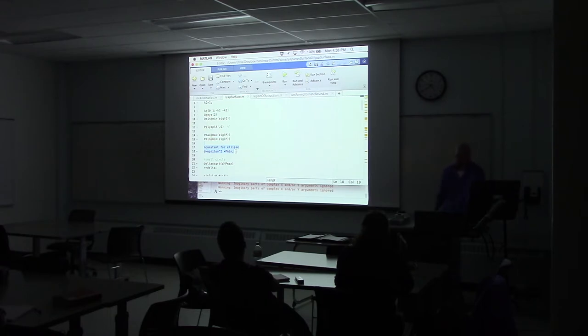So the equation for calculating the ellipse is that D equals epsilon squared times P min. So I'm solving that equation for D. So that gives me a Lyapunov surface, basically.